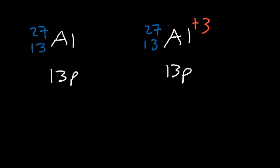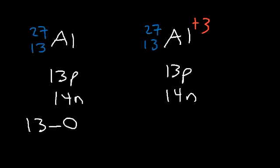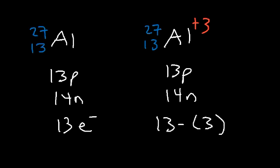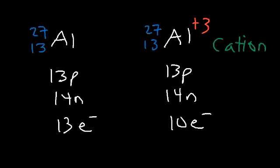The number of neutrons is the difference between the mass number and the atomic number: 27 minus 13 equals 14. So both the atom and the ion have 14 neutrons. For electrons, it's the atomic number minus the charge. For the aluminum atom: 13 minus 0 equals 13 electrons. For the aluminum ion: 13 minus 3 equals 10 electrons.